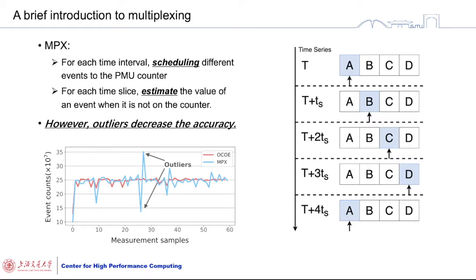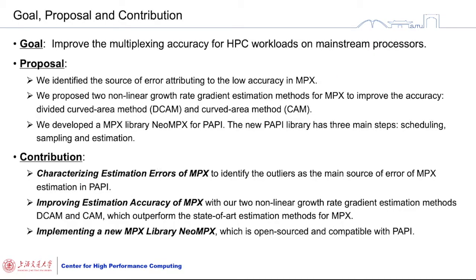After that, multiplexing switches the counters from one event to another event. The interval is 10 microseconds from one event to the next. However, we can find that outliers are generated in multiplexing mode. Compared with the OCOE mode, these outliers decrease the accuracy extremely. You can observe extremely high or extremely low outlier values.